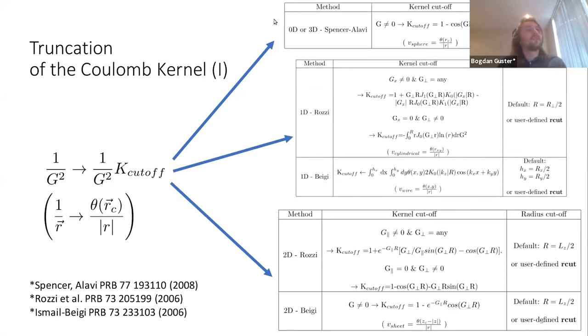If we're treating zero-dimensional materials, you have a simple formula for this with a specific mention that you have, as indicated in the paper by Spencer and Alavi, a correct cutoff radius in order to treat the Coulomb kernel.